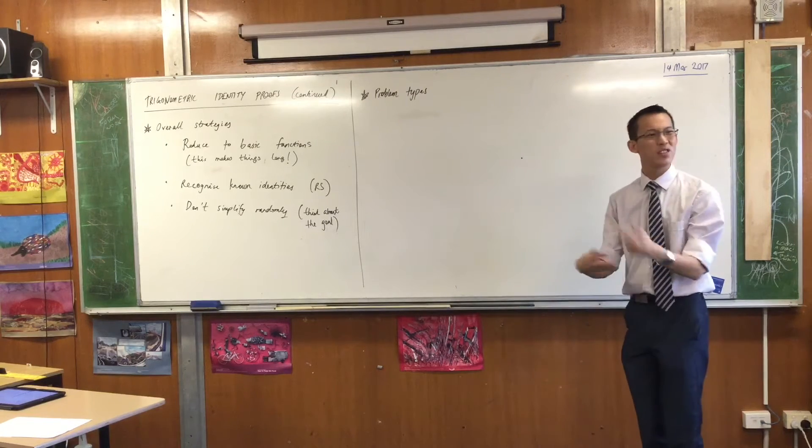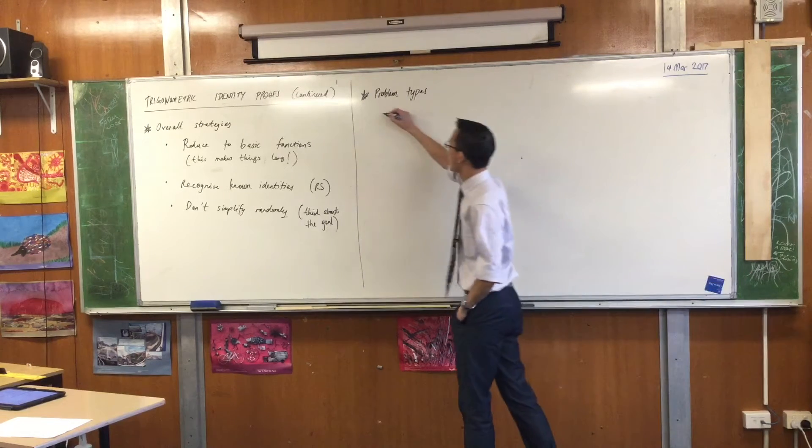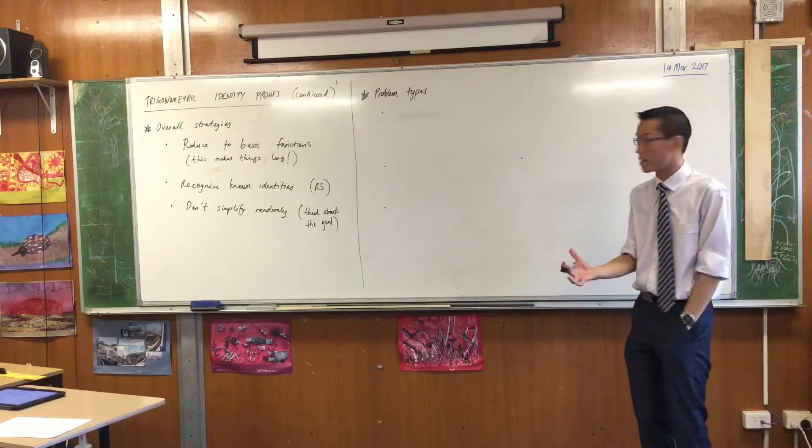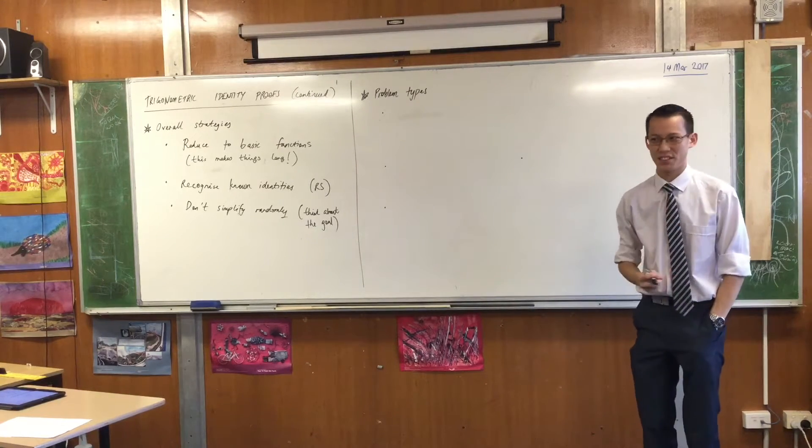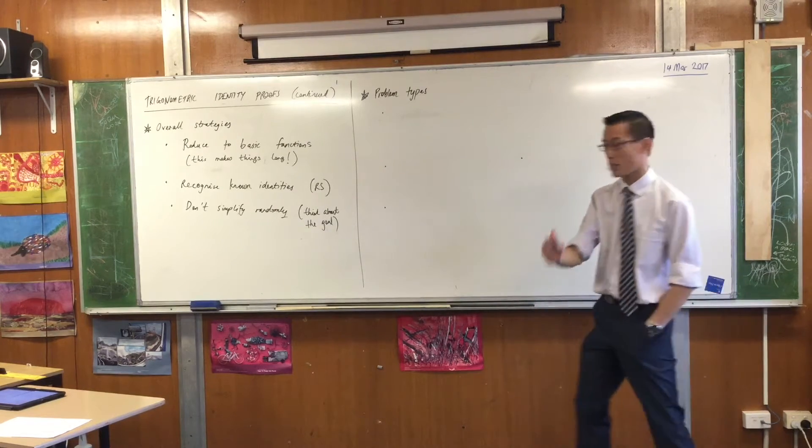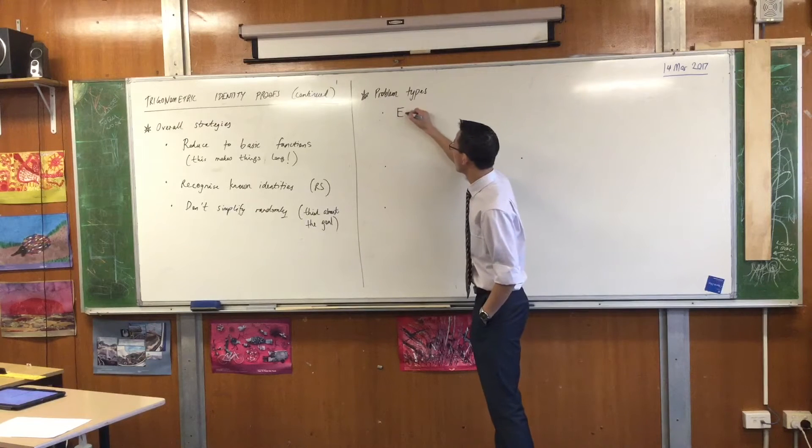Lastly, problem types, and I'll give you some examples here. There are three basic kinds of trig identity proofs that require very slightly different approaches. So the most straightforward one is the one you will see 90% of the time, you've seen them already. It's where you have something of this form.